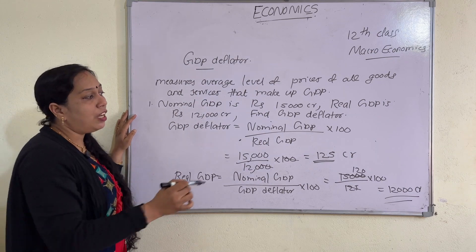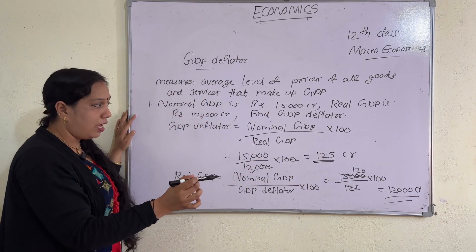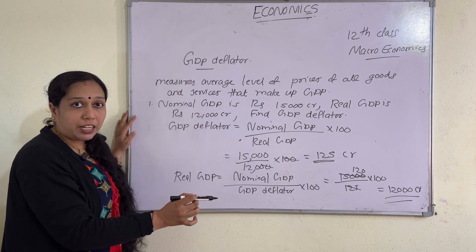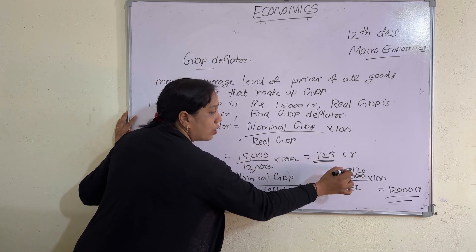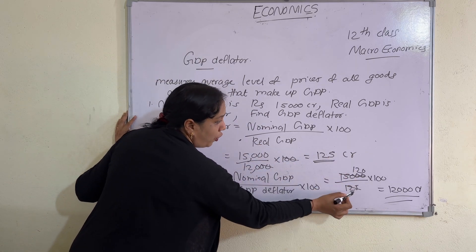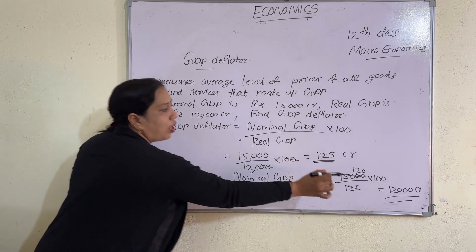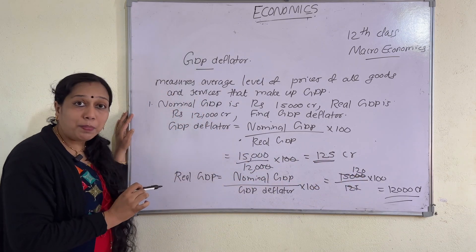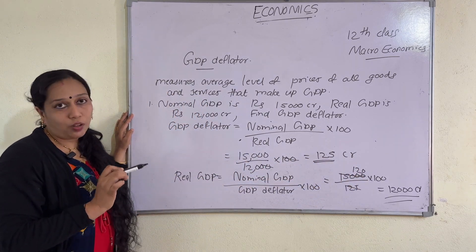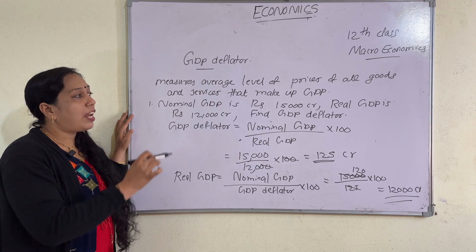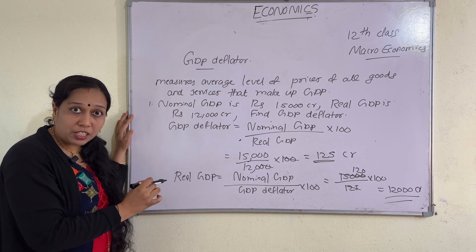Here nominal GDP is 15,000 crore, and the GDP deflator is 125. So real GDP = 15,000 divided by 125, multiplied by 100. The answer is 12,000 crore. So the real GDP is equal to 12,000 crore.